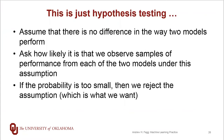Hopefully you're recognizing all of this as just hypothesis testing from your stats class. How this relates to our comparison of one model versus another model is that we're going to assume there's no difference in how the two models perform. Then we'll measure their performance across not a single validation set, but a set of validation sets, and ask how likely it is that we should achieve this particular set of observations under the null hypothesis. If the probability is too small, we'll reject the assumption and conclude there is a statistical difference between the two models.